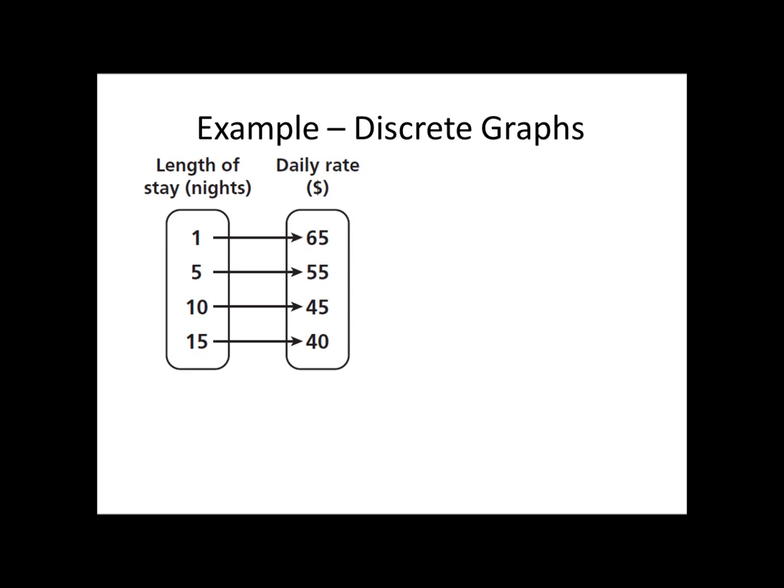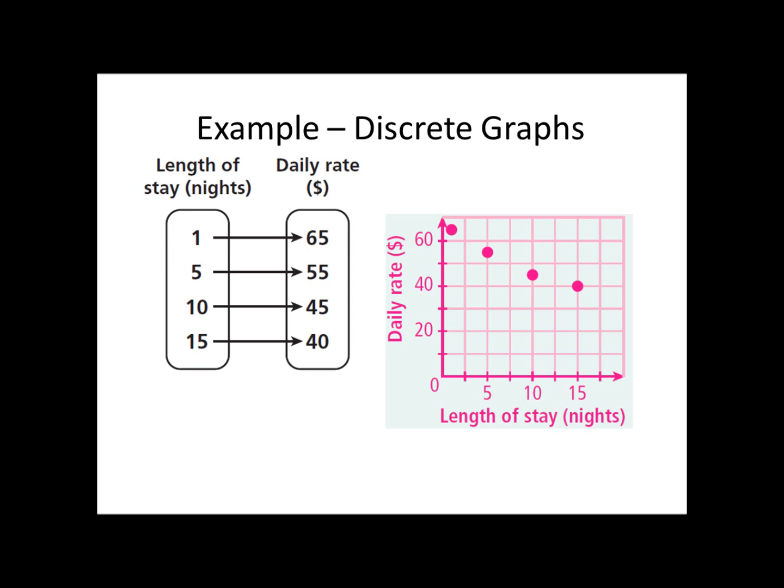Let's make a discrete graph now out of this mapping diagram. Now, this function is telling us the daily rate for a length of stay at a hotel. So, if we stay for one night, the daily rate is $65. If we stay for five nights, the daily rate is $55. And so on and so forth. So, we're going to make a graph that has these four points plotted out. Because there's no such thing as staying for a night and a half, or 2.1 nights, we can't fill in. We're just plotting the points that are given. Do not draw the graph. Now, you would do this on graph paper, and cut it out, and put it on your homework. You don't have to box in graphs. If your answer is a graph, you don't have to box it in.